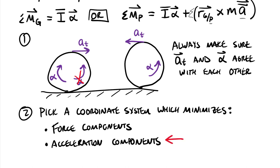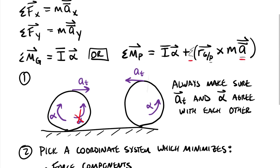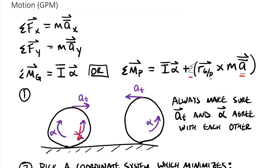We also need to think about minimizing our acceleration components, since in dynamics we have the right side of the equation with all those acceleration terms. I tend to go with minimizing my acceleration components. If we can isolate all linear motion in one direction, one of the accelerations (ax or ay) could go to zero, giving sum of forces equals zero — more of a static-style equation, which simplifies the work.